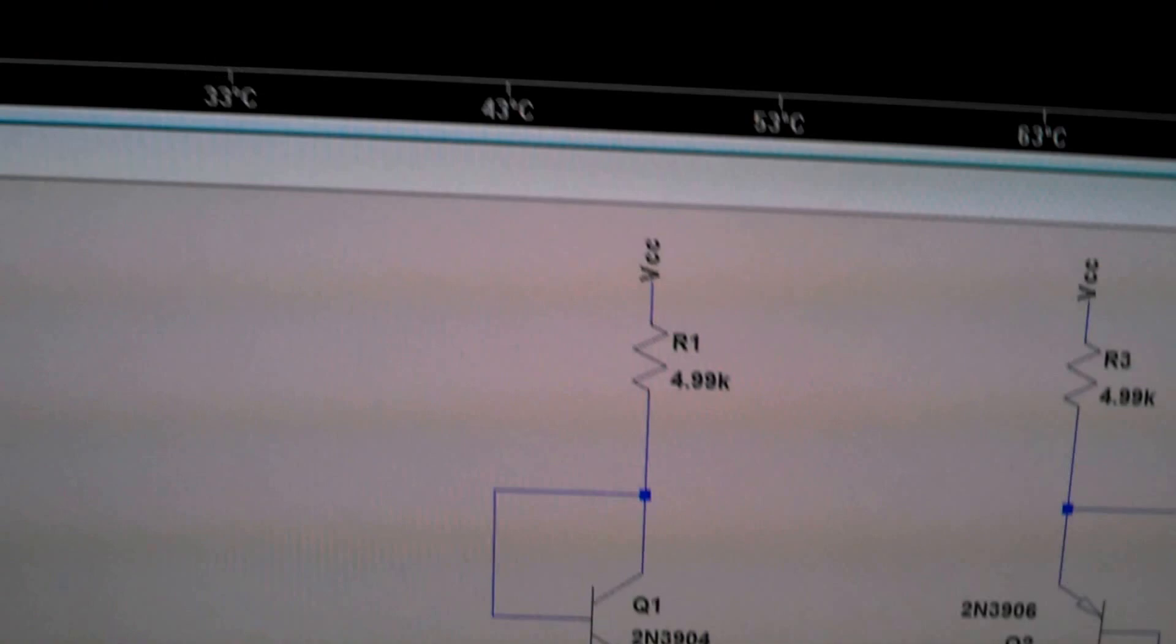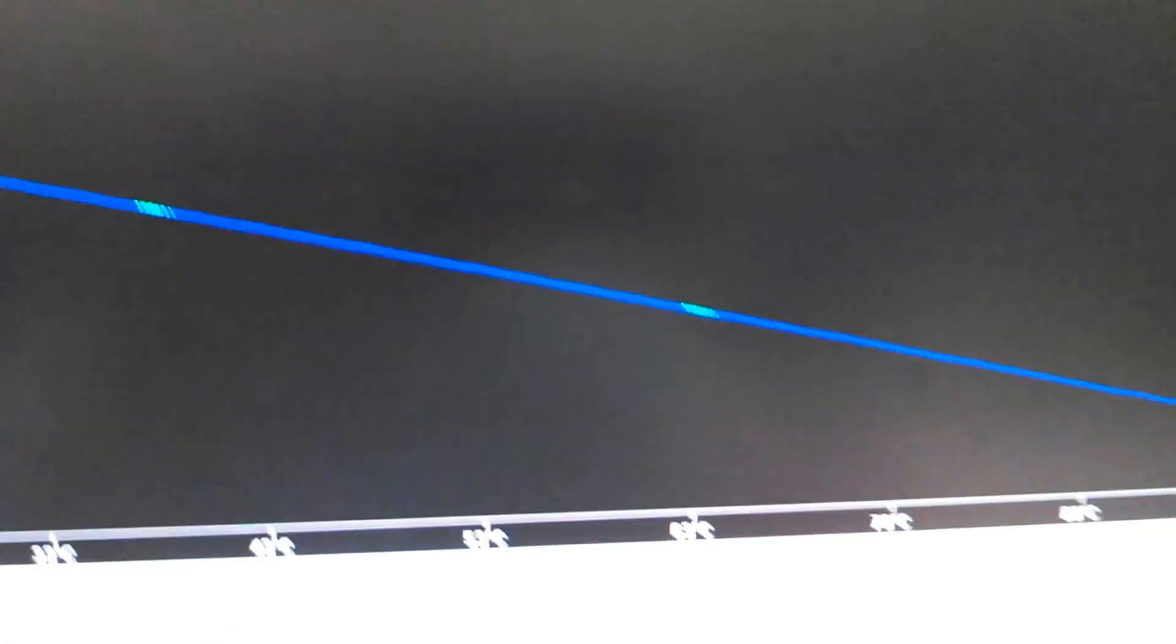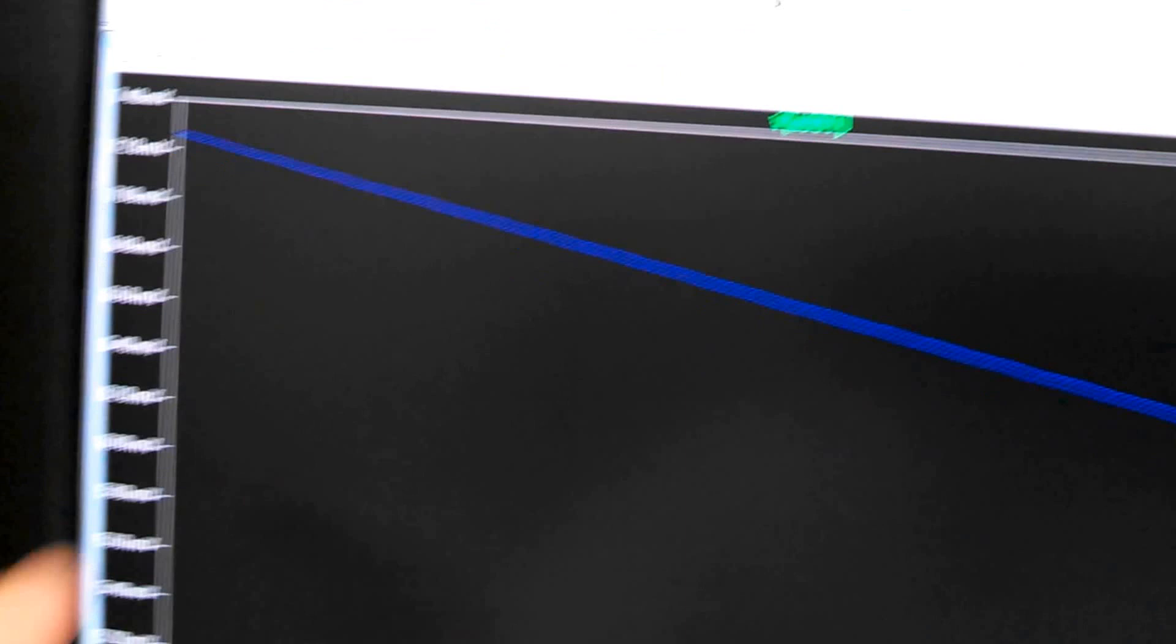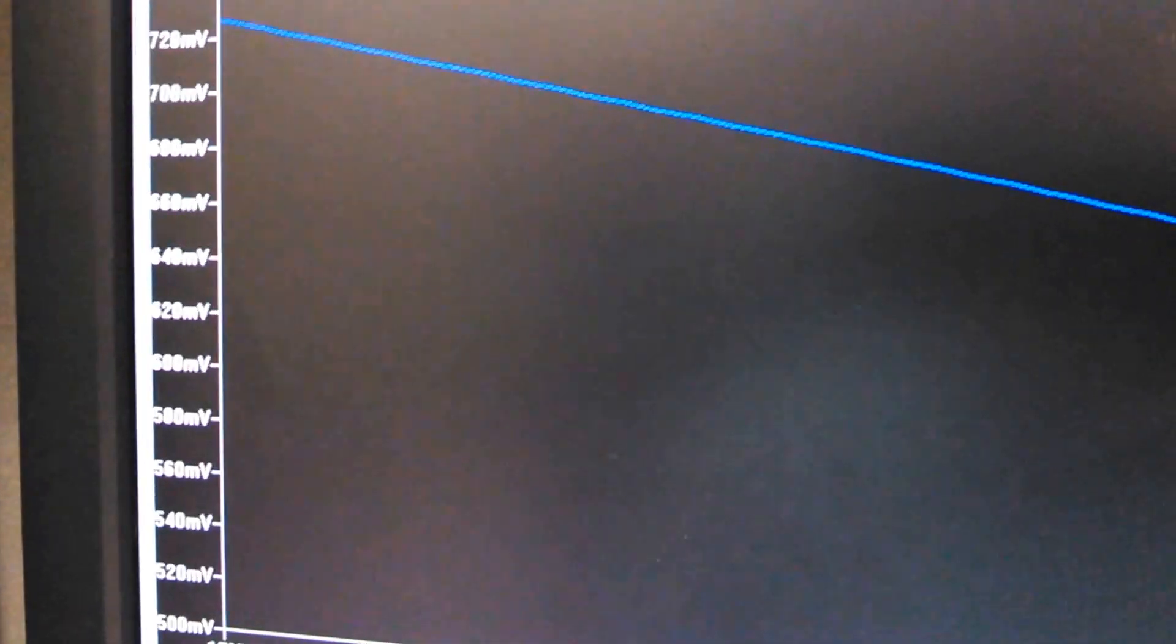This is LTSpice, and if I pull back some, you can see that this curve is dang near linear from minus 17°C all the way to 100°C. And across that range, we see about 200 millivolts change in output.